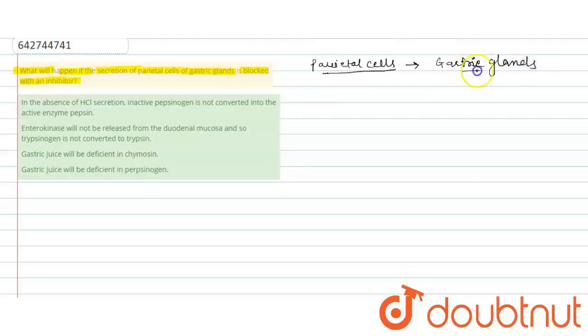This gastric acid is known as hydrochloric acid or HCl. So when the secretion of parietal cells is blocked by any inhibitor, the HCl is not secreted.